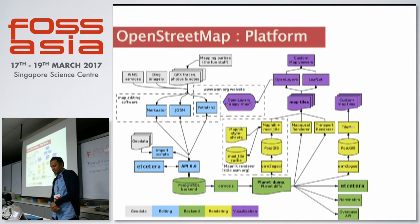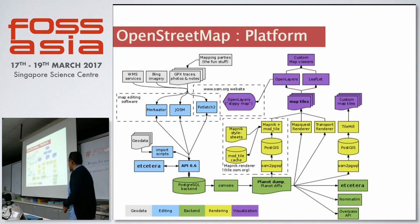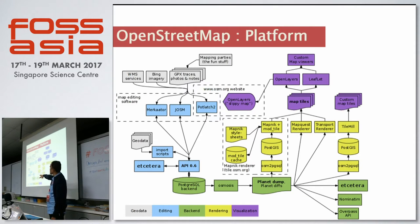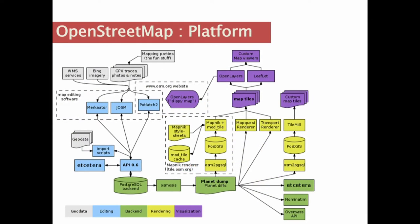A common misconception about OpenStreetMap is that people ask me, 'What is the API? How can I get the API?' You don't use the API unless you're building the editor. The API in OpenStreetMap is only used if you're developing map editing software — meaning you want to add data into OpenStreetMap. If you simply want to visualize the data or look at the map, you can use OpenLayers or Leaflet, which are popular JavaScript libraries. This is all an open platform with open data. You can fork the platform and build your own OpenStreetMap server — that's quite easy to do.